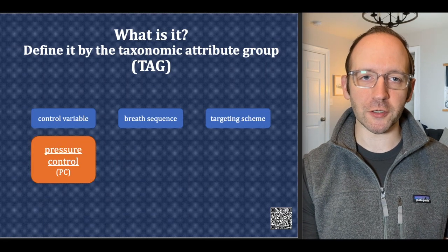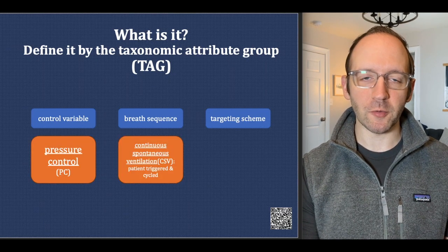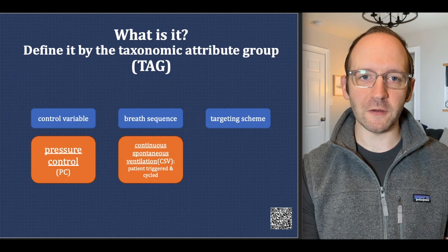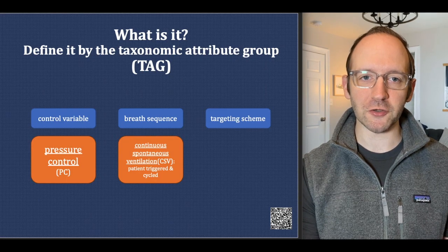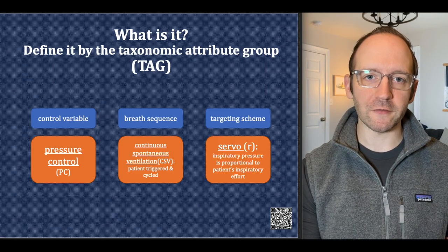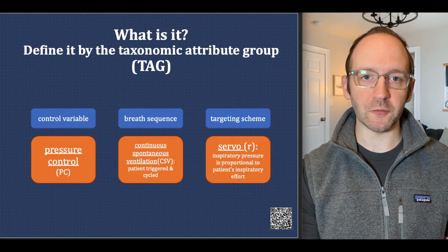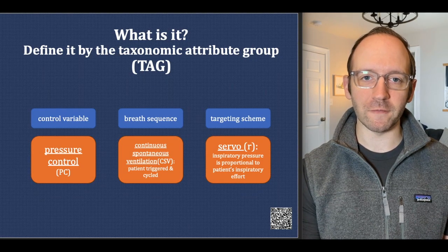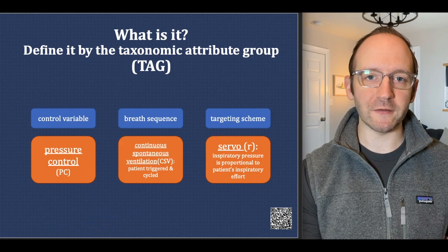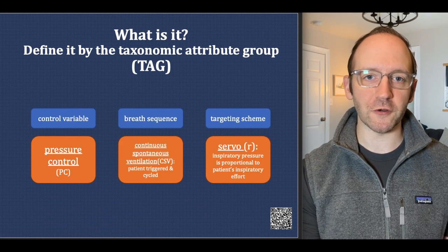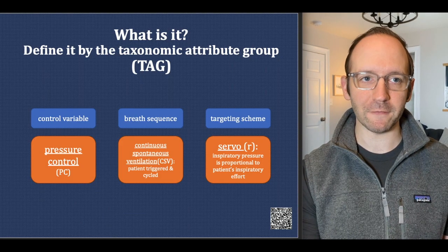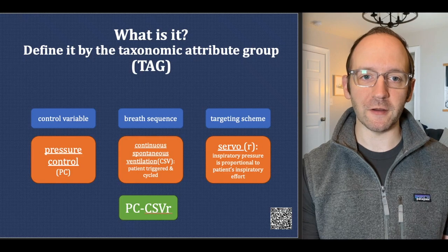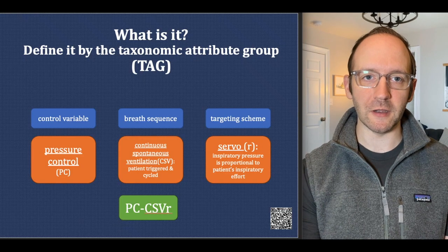For PAV, this is a pressure control type of mode. The breath sequence is continuous spontaneous ventilation, so this is a patient-triggered and patient-cycled mode, similar to pressure support. The targeting scheme is the really interesting thing about this mode — it's called servo targeting, not to be confused with the servo ventilator. Servo targeting implies that inspiratory pressure is proportional to a patient's inspiratory effort. Written together, it is PC-CSV-r.